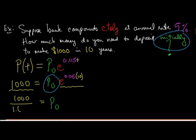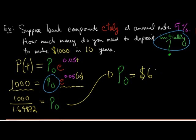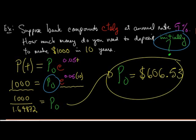In fact, it's 1.64872, and so your final answer is p0 equals $606.53. Okay, so you need $606.53 in order, you need to start with that money in order to make $1,000 in 10 years if you deposit that initial amount at the bank, at that particular bank.